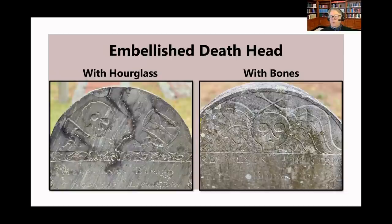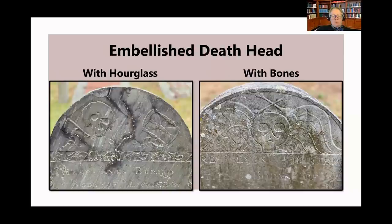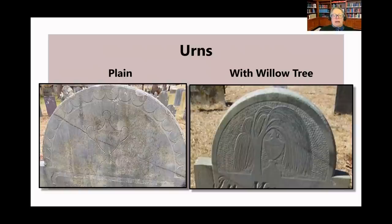While the death's head was still the predominant figure carved into grave markers, it began to be embellished somewhat. Here on the left we have a death's head with an hourglass, which symbolizes the rapid passage of time with death at the end. And on the right we see bones, which warn us that we are all mortal and will die.